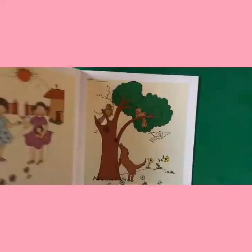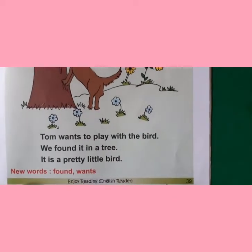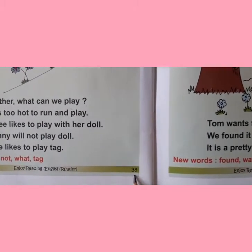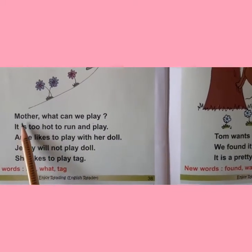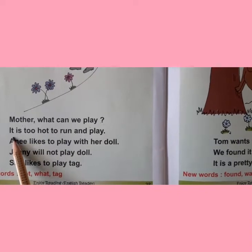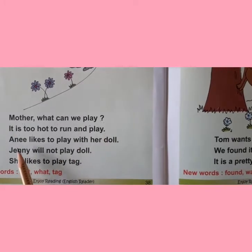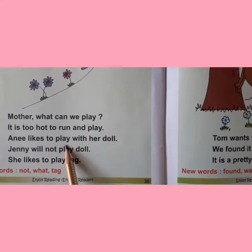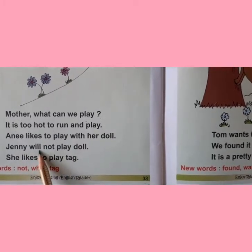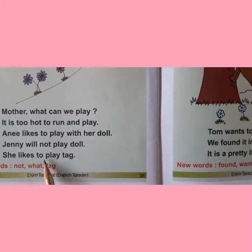In your English reader book, open page 39. I will teach you how to read sentences on this page. But before that, let us revise the previous page, that is page 38. Now here our first sentence is: Mother, what can we play? And the second sentence is: It is too hot to run and play. Next is: Annie likes to play with her doll. Then we have: Jenny will not play doll.